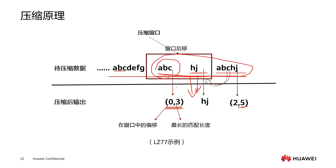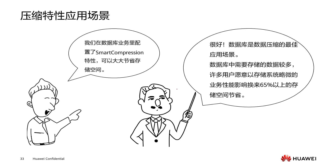This is our compression principle. The compression feature is commonly applied to databases, which are one of the best application scenarios for data compression. Many users are willing to accept a slight impact on storage system business performance in exchange for over 65% savings in storage space. File services are also a common application scenario, as are engineering data, geological and seismic data — all of which can achieve storage space savings through data compression.